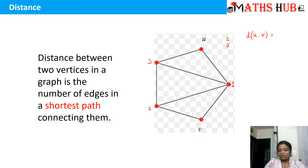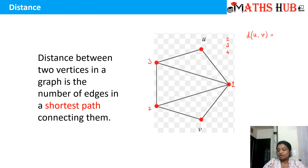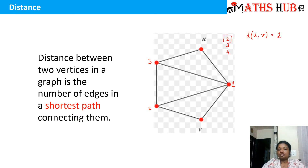Then we can go from U to 3, 3 to 2, 2 to 1, and then 1 to V — that gives a path of length 4. Likewise, you can construct many other paths. But which one is the shortest path? The one with length 2. So the distance between the two vertices U and V is defined as 2. You need to calculate the shortest path between any two vertices and the length of that path is the distance.